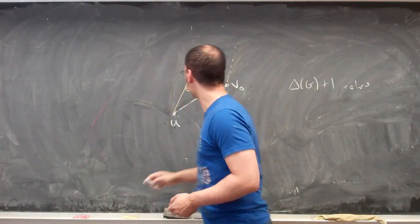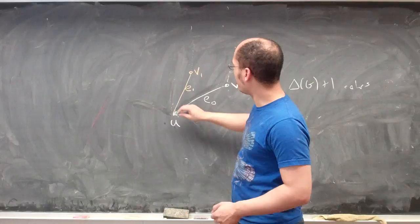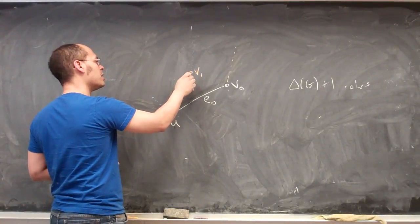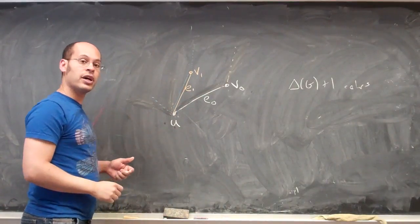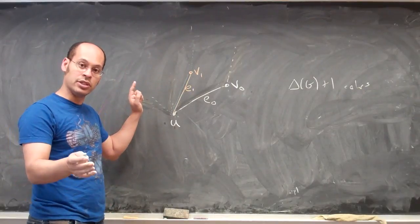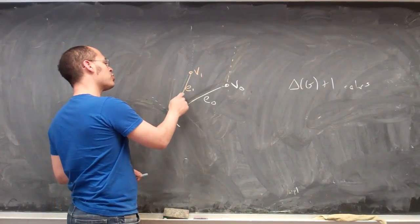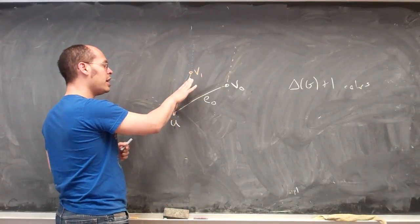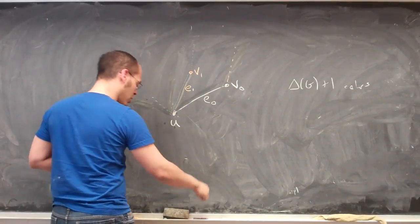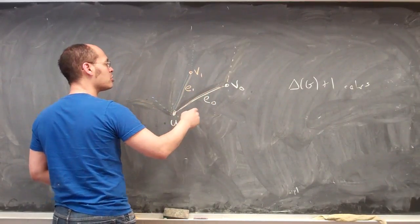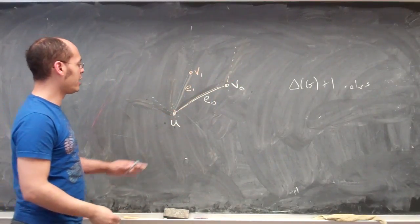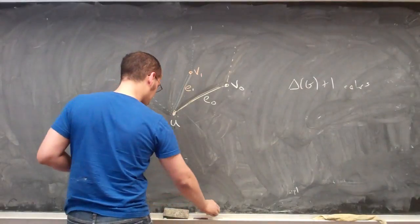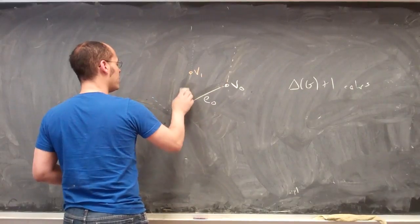If there is such a colour — say blue — then I can change the colour of edge one from orange to blue. That's fine because I didn't use blue at v0 or u, so I still have a proper colouring. But now, because this edge has been changed from orange to blue, we haven't used orange at u anymore. So I can recolour edge zero orange, which is fine because I wasn't using it there either. I've now shifted that orange use and have a proper colouring of all edges including e.